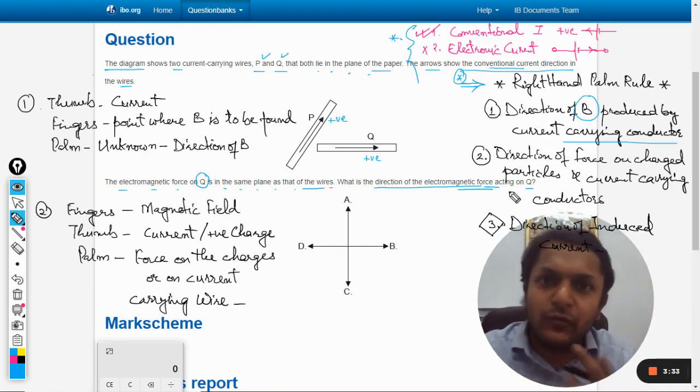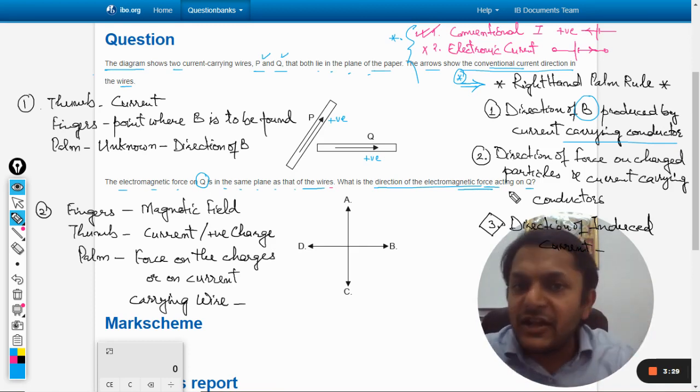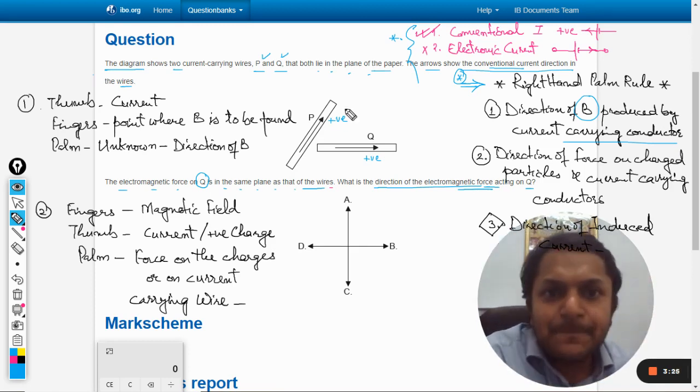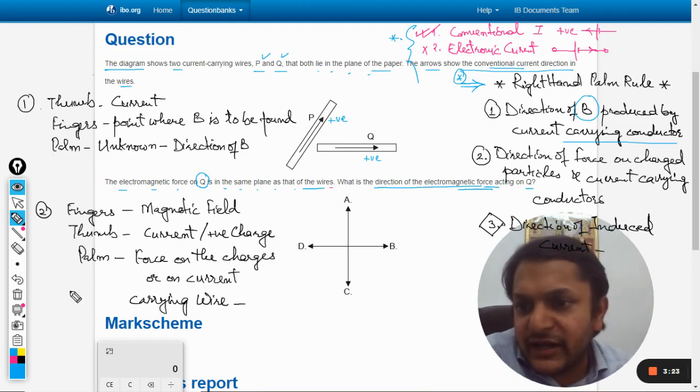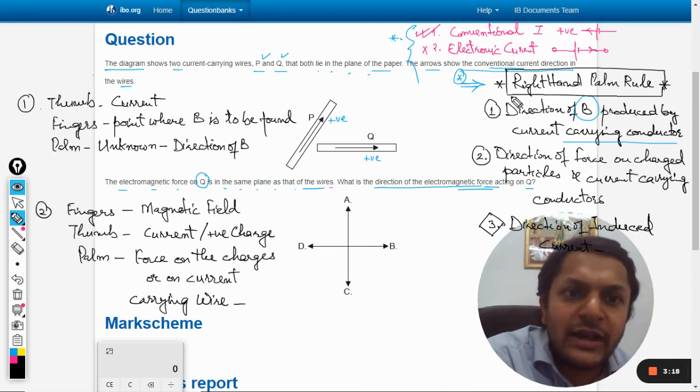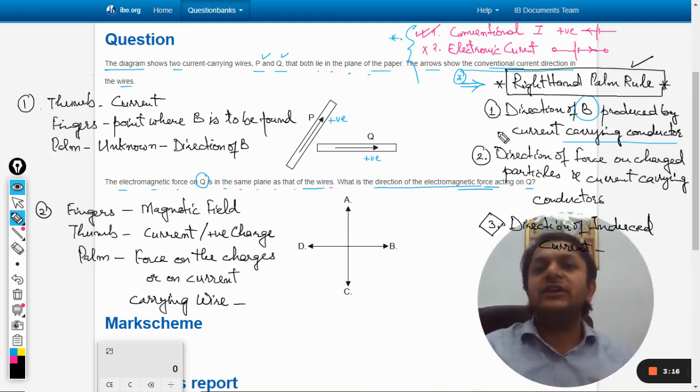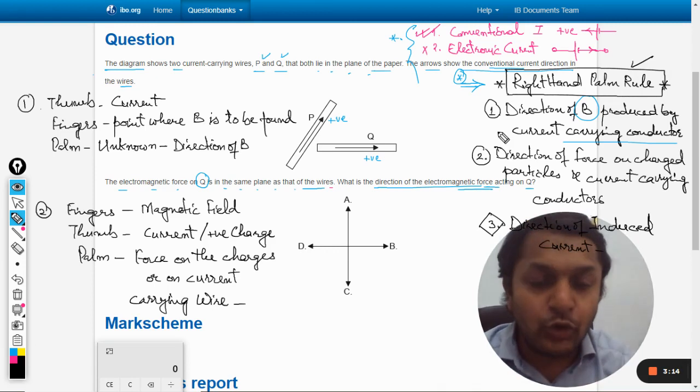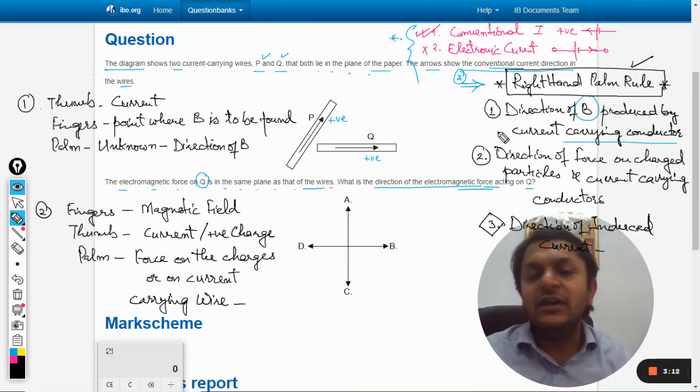Part one of this problem is what is the direction of the magnetic field that is produced by wire P. And for that, as I have already told you many times, instead of Fleming's right hand rule or left hand rule, I prefer using right hand palm rule which is far more easier, less confusing, and more effective.